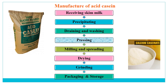Here is a flowchart for preparation of acid casein. First is receiving skim milk, then precipitating using acid, then draining and washing to remove the watery parts after coagulation, then filtering and pressing, then milling and spreading, then drying, then grinding, then packaging and storage. All these steps will now be discussed in more detail.